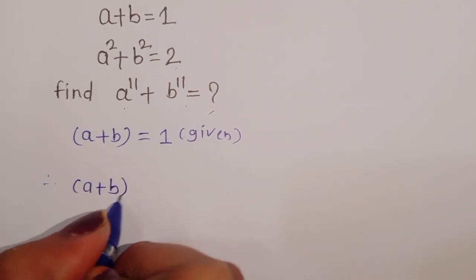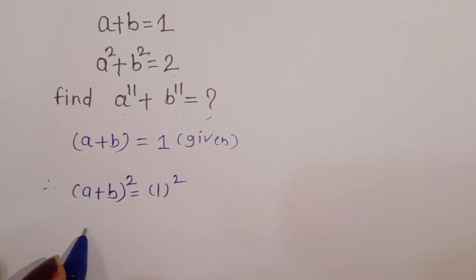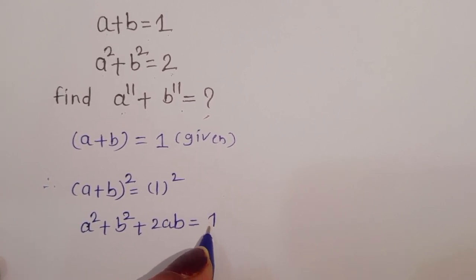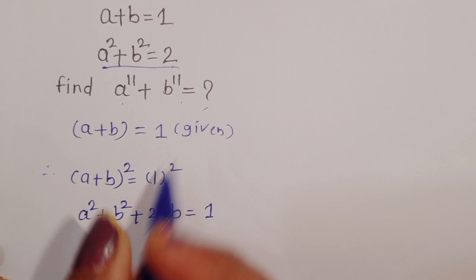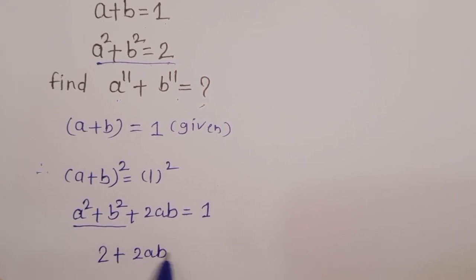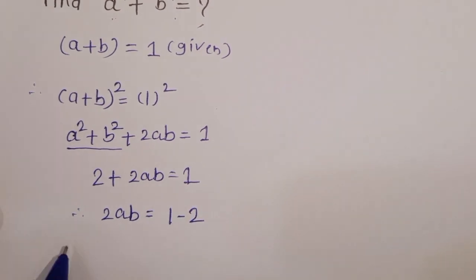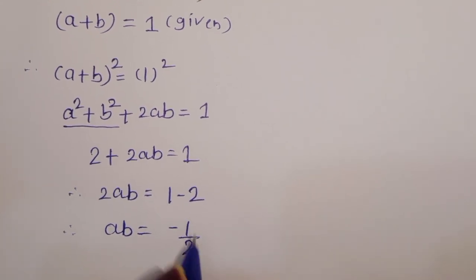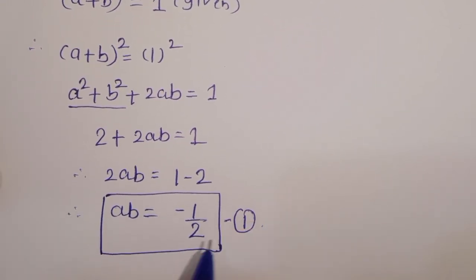We can take the square of this: (a plus b) square is equal to 1 square. That gives a square plus b square plus 2ab is equal to 1. We know that a square plus b square is equal to 2 (given), so 2 plus 2ab is equal to 1. Therefore 2ab is equal to minus 1, so ab is equal to minus 1 upon 2. This is equation 1.